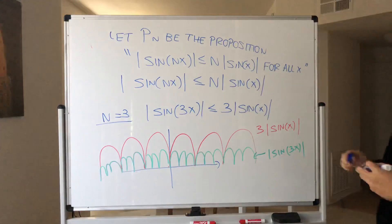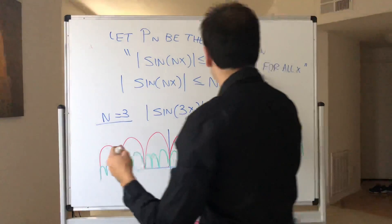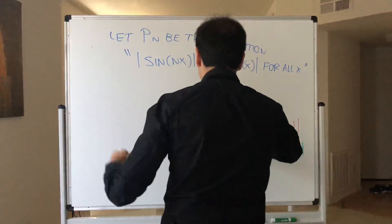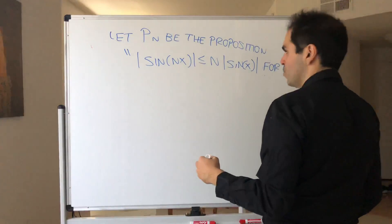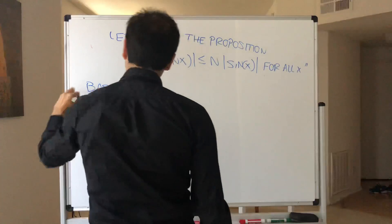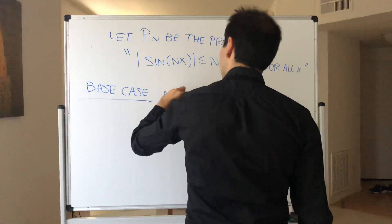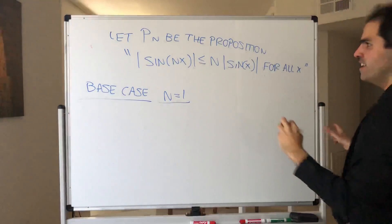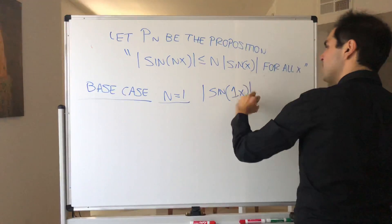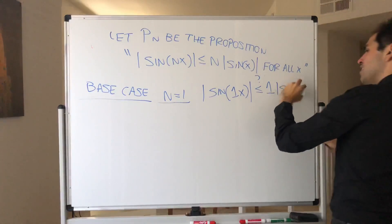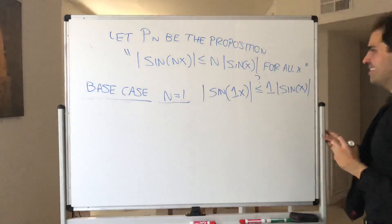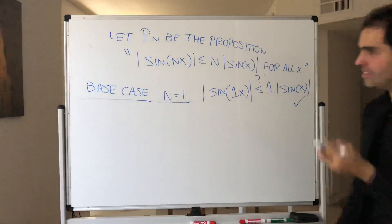Again, you're fixing n and assuming it's true for all x, and what you have to show is that assuming it's true for n, you show it's true for n plus one. First of all, let's do the base case, which is n equals one. What does it say for n equals one? Is it true that absolute value of sine of x is less than or equal to one times absolute value of sine of x? And indeed it is true — absolute value of sine of x equals absolute value of sine of x. So that's not a problem.